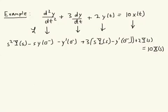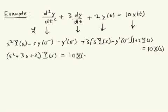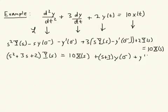We can rearrange this equation and make it look a little simpler. We group the terms that have Y(s) in them first, so we get (s² + 3s + 2)·Y(s) equals 10X(s). Now I'm going to move all of the terms involving the initial conditions over to the right-hand side as well, so what I'm left with is plus (s + 3) times y(0⁻) plus y'(0⁻).